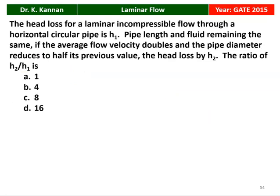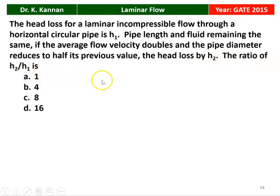The next question from the GATE 2015 question paper. The head loss for laminar incompressible flow through a horizontal circular pipe is H1. The pipe length and fluid properties remain the same. If the average flow velocity doubles and the pipe diameter reduces to half its previous value, find the ratio H2 by H1. The answer is 8.